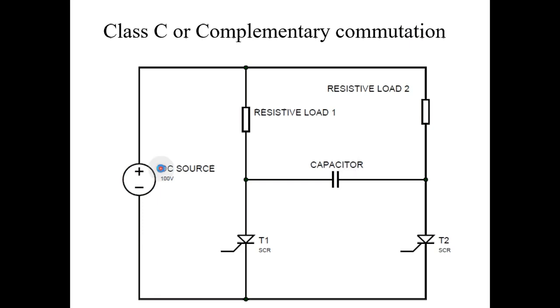Once again, current diverts from load 1 to load 2. Now, current flows from the DC source to load 2, SCR2, and back to supply. Like this, you can turn off main thyristor 1 by turning on main thyristor 2.